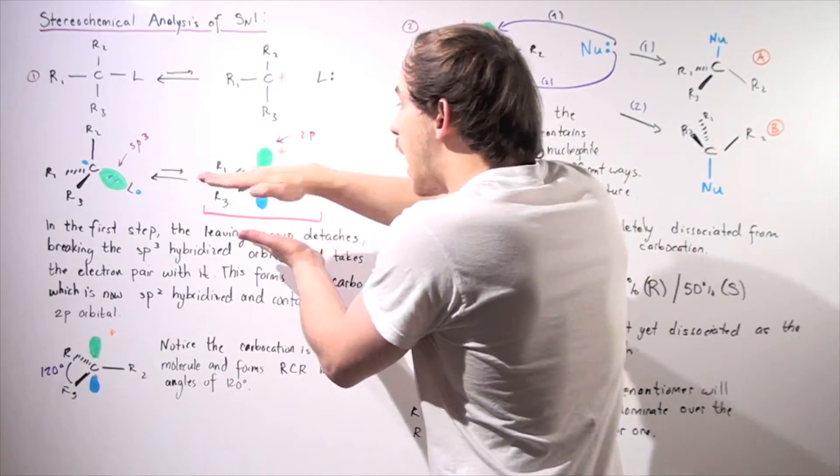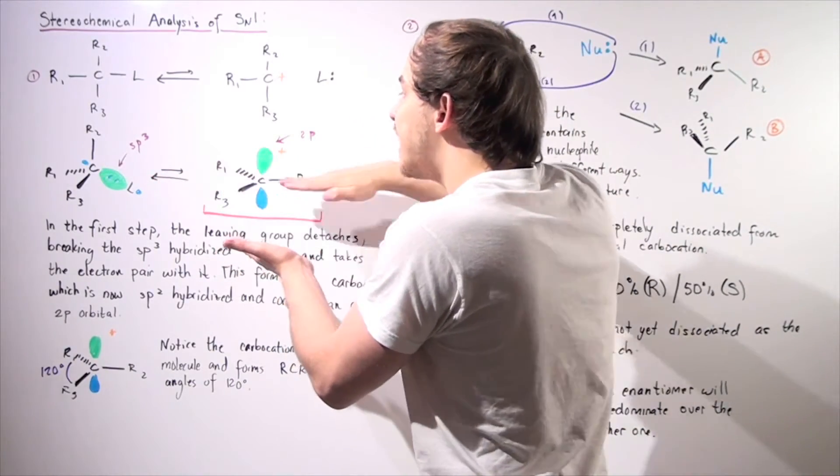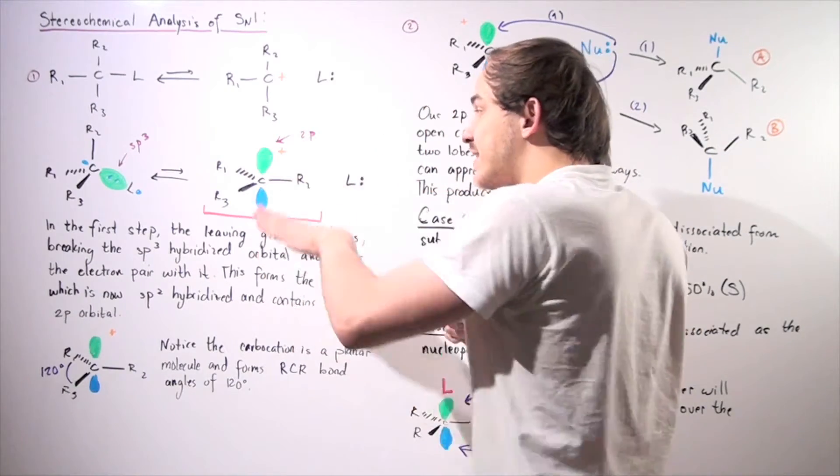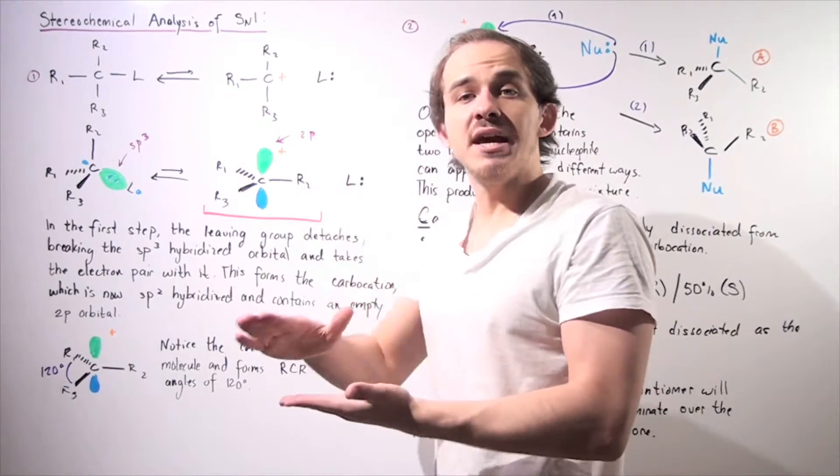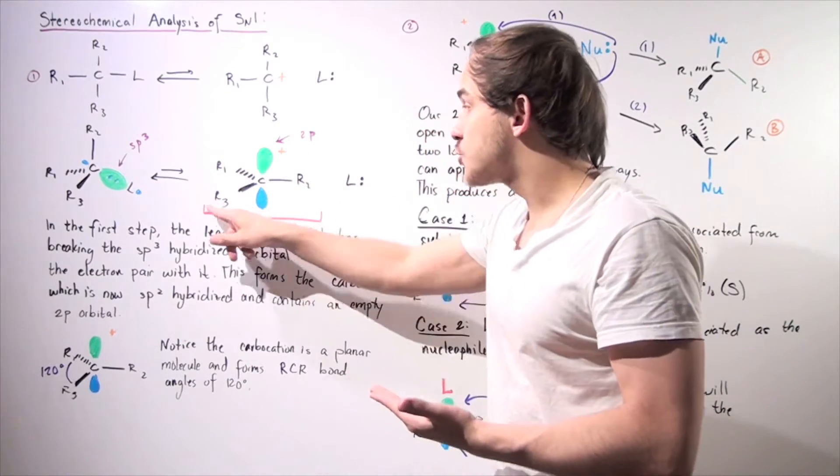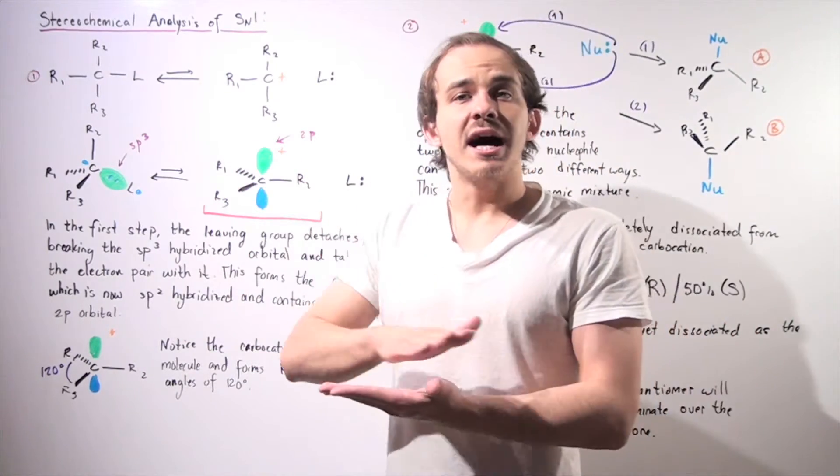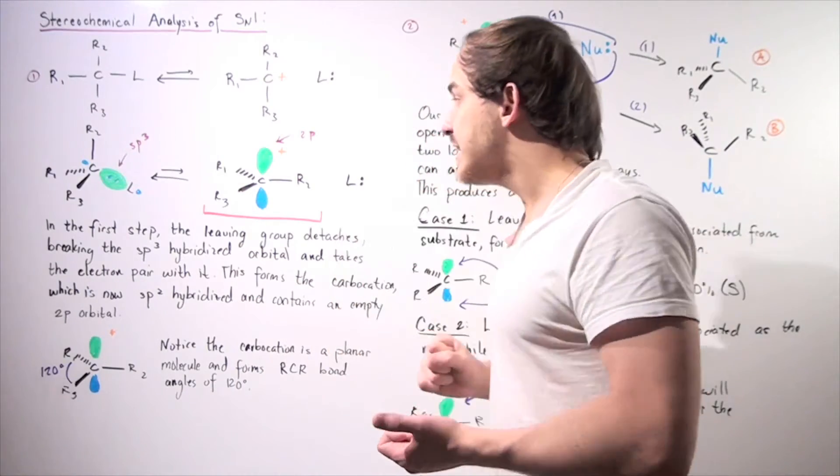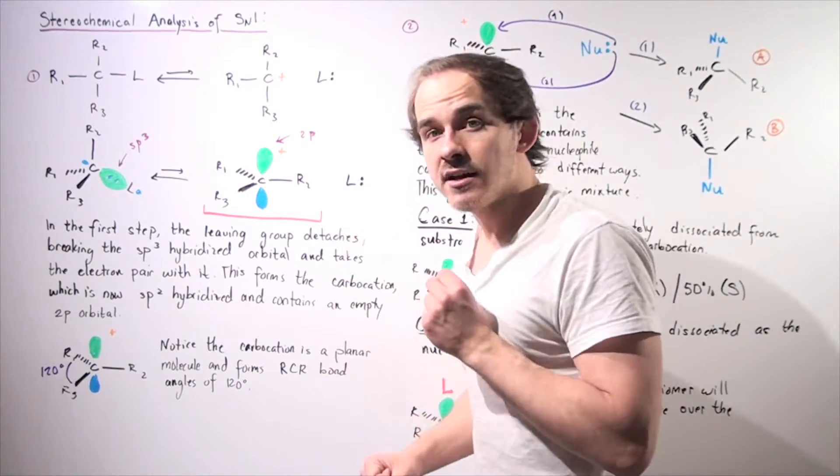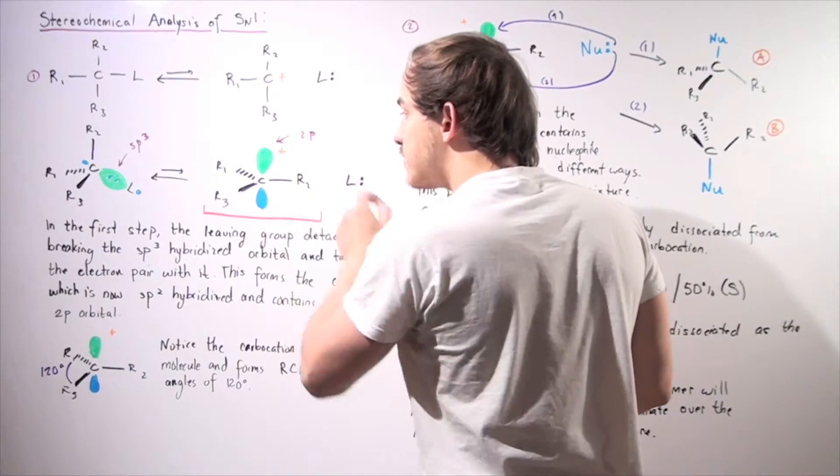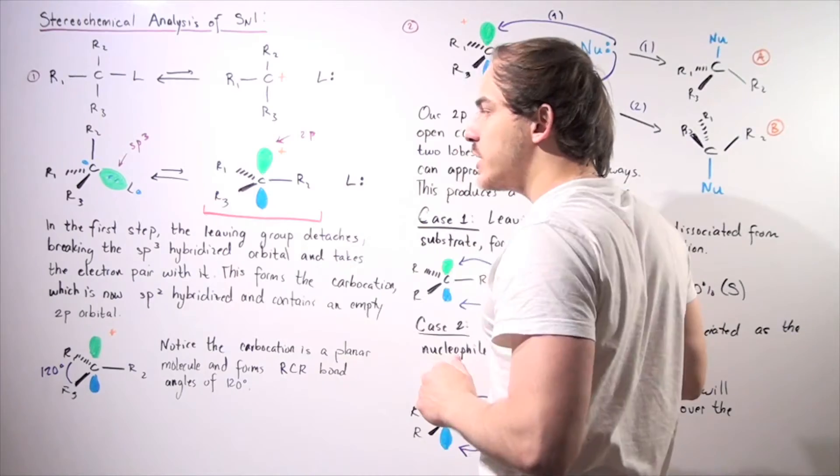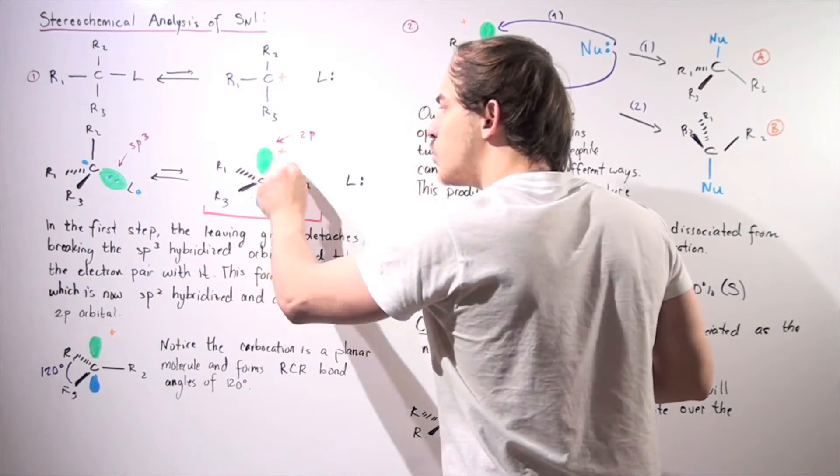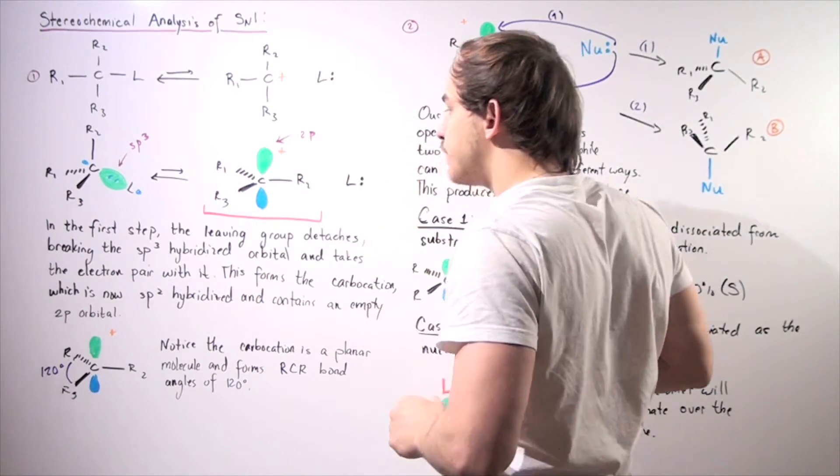So this molecule is completely planar. That means if we take this molecule and place it on the xy axis, all these bonds will be on the same plane. All these groups, the R groups, will be on the same plane. And that means that the bond angle between any of these atoms, for example, the RCR angle, is 120 degrees. So we have 120, 120 in the back, and 120 in the front.